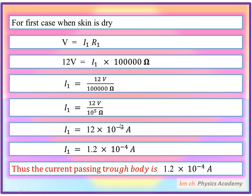Since it's current, the unit will be ampere, so 12 into 10 power minus 5 ampere. If we place the decimal point here, the power becomes one less, meaning 1.2 into 10 power minus 4 ampere. Thus the current passing through body is 1.2 into 10 power minus 4 ampere. Now let's see the second case.